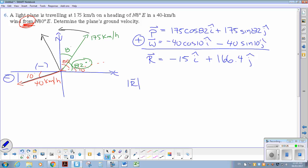So to determine the plane's ground velocity, which I need, means I need the speed and distance. So negative 15 squared, 166.4 squared. So that would give me square root, bracket. So, 15 squared plus 166.4 squared, gives me 167. So it has slowed the plane down a little bit. That headwind.